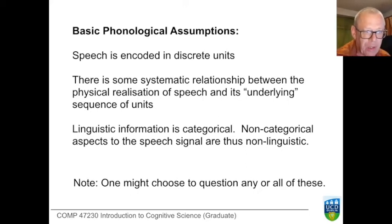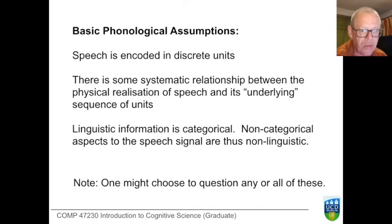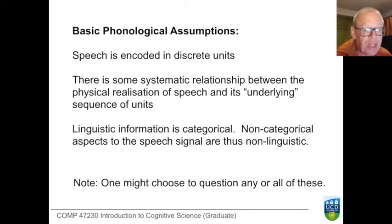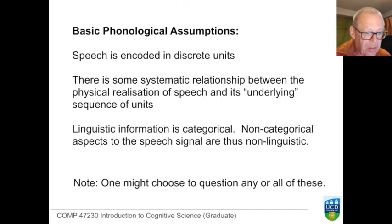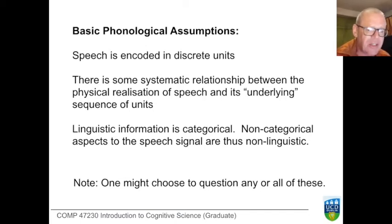That is, the information which is strictly speaking linguistic is information that distinguishes between categorically opposed units. There are many aspects of the speech signal that don't lend themselves to this kind of analysis — I might talk in a breathy voice, for example, and that's not expressible with these assumptions, or I might speak really quickly and that's not expressible either. Those are non-categorical aspects of the speech signal.